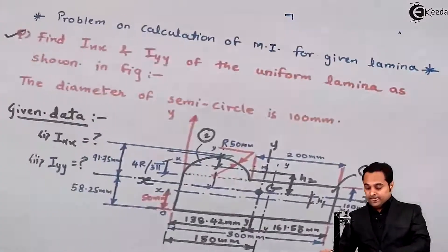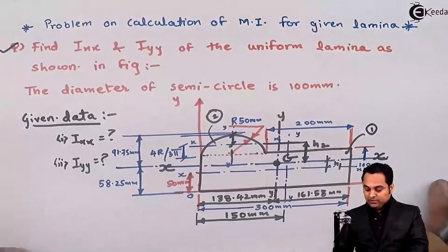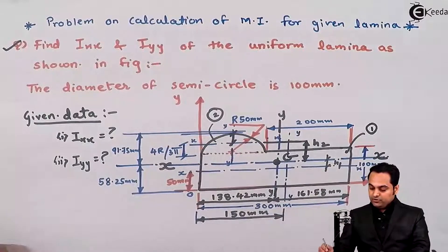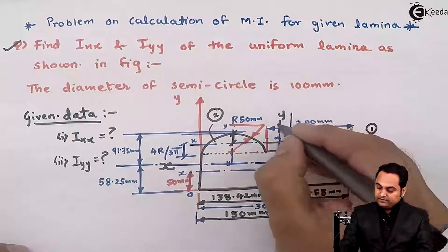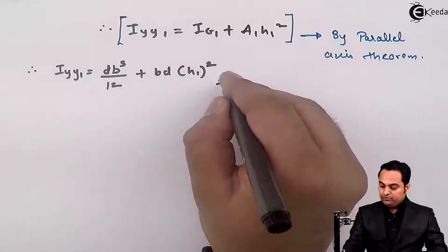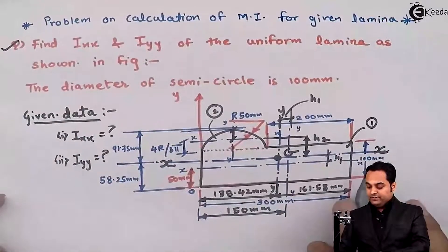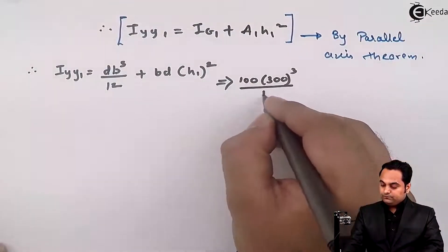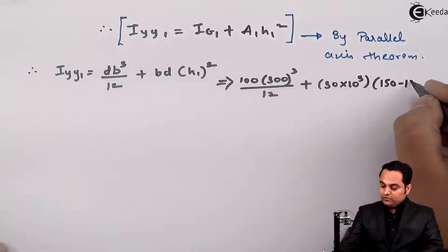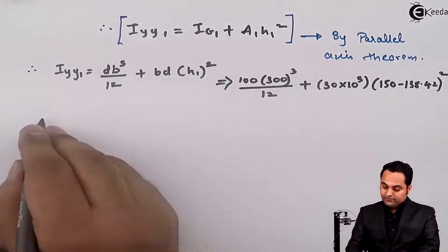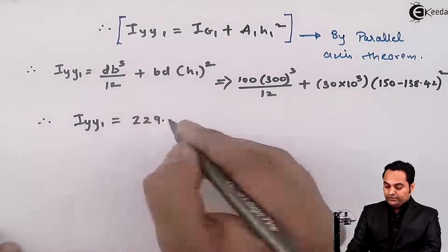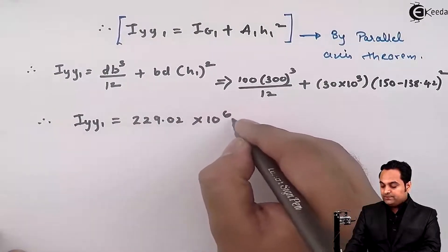Putting in the values: Iyy1 = (100 × 300³)/12 + 30×10³ × (150 − 138.42)². Therefore Iyy1 = 229.02 × 10⁶ mm⁴.